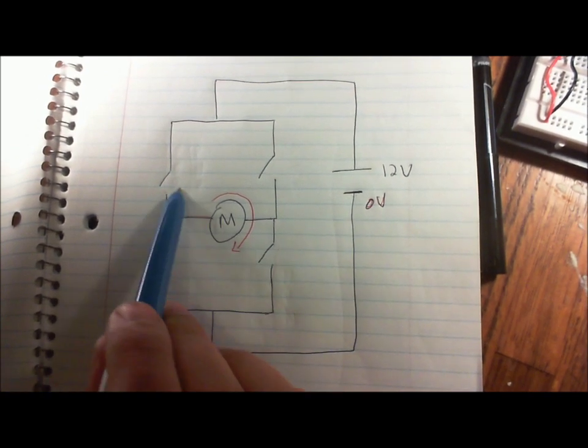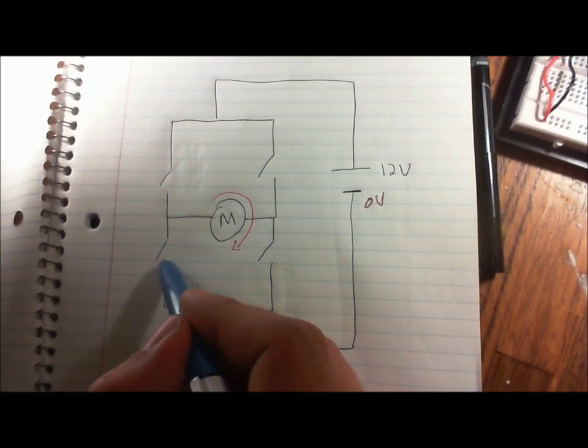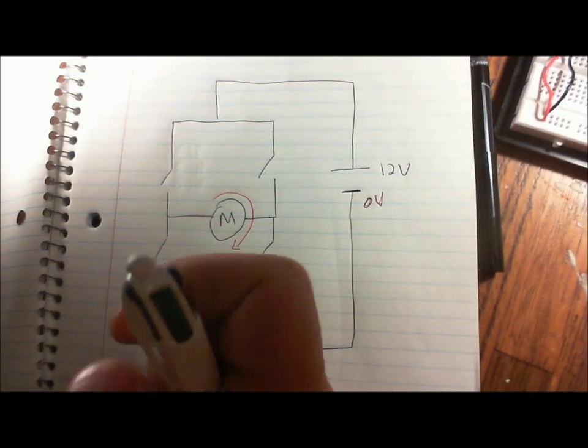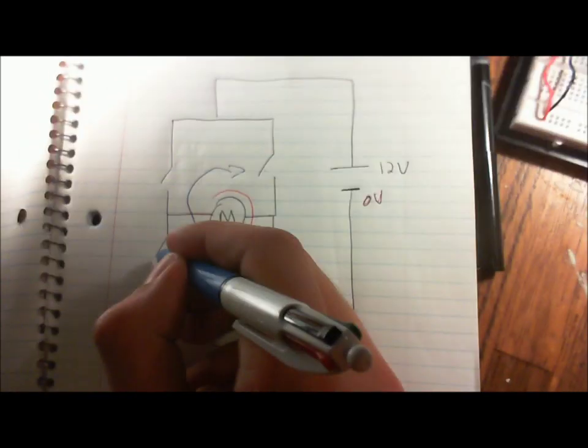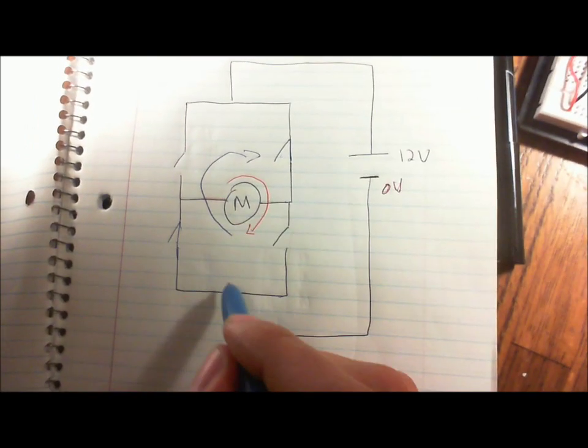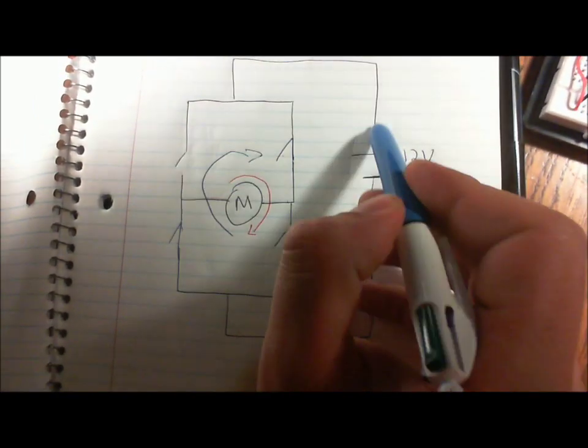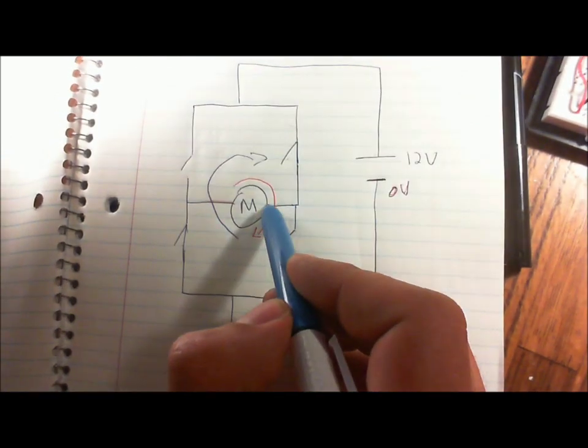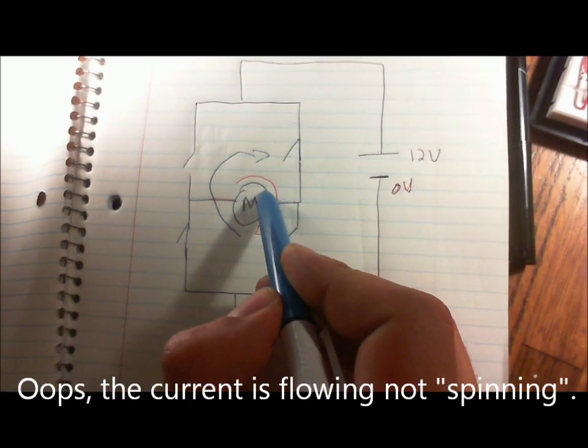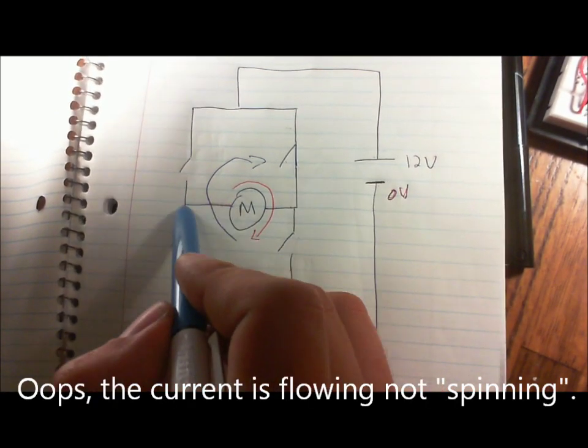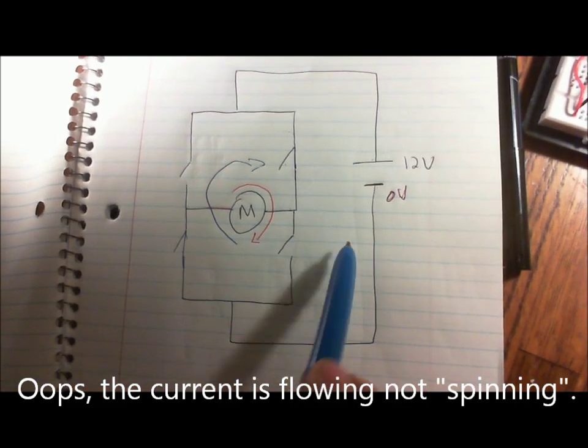So now if these two switches are closed here and here, the motor is going to spin the other way. Because exactly the opposite is happening. The current is coming from here, and it's spinning through the other side of the motor, and making it spin the other way. And it's flowing back.